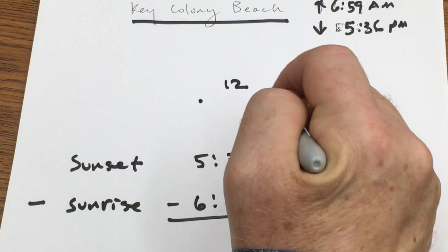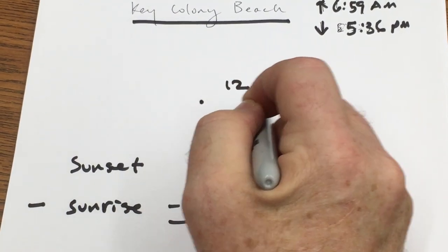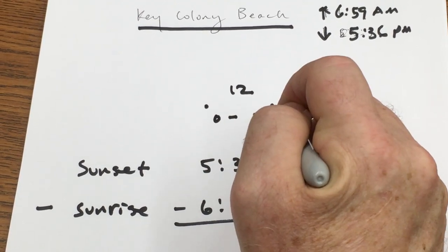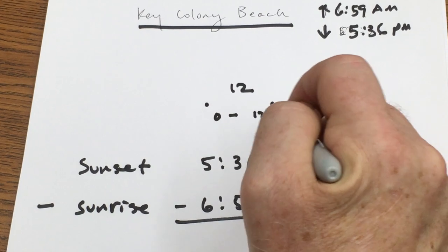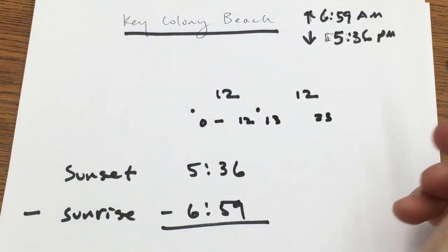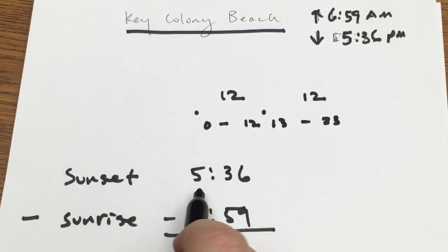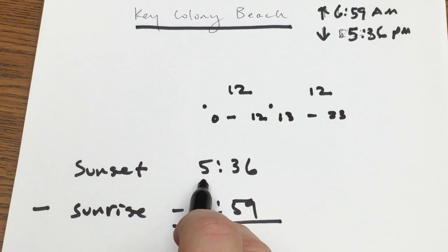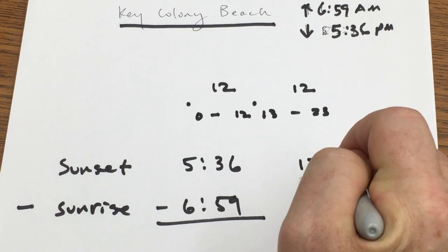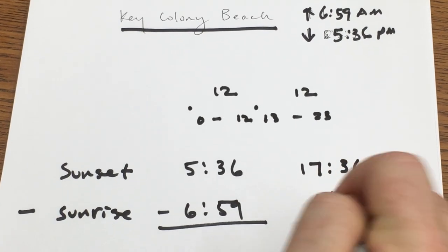And then I have another 12 hours that start at noon to midnight. So everything on this side is 0 to 12. Everything on this side is you just add a 12. So it would be from 13 to 23. We can't have a 24 because it just doesn't work. So we're going to change this to military time. So we're going to add 12. So 5 plus 12 is 17:36. And we're still going to be able to subtract 6:59.